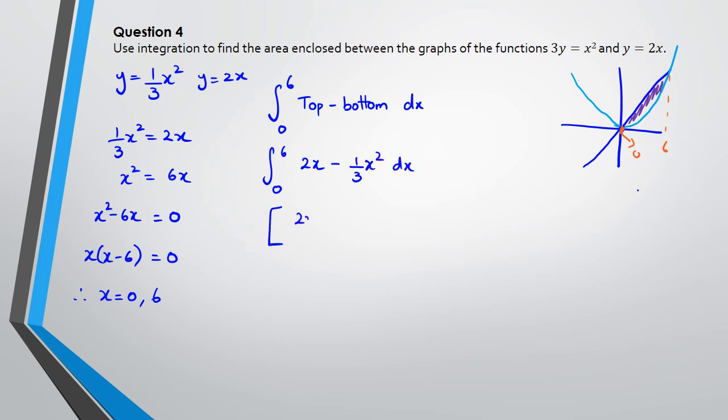So integrating this we're going to get 2x squared over 2 minus one over 3 x cubed multiplied by the new power which is 3, and this is all between 6 and 0. So what we have is x squared minus x cubed over 9, and that's between 6 and 0.